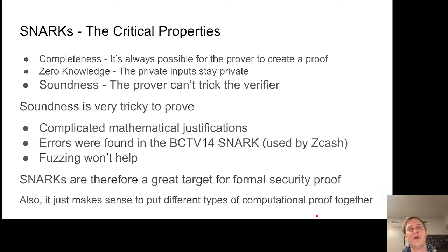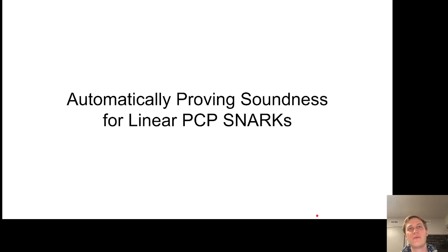Based on the story I just told, it makes sense to put different kinds of computational proofs together. We have formal proofs, we have cryptographic SNARKs, which is another kind of proof. It makes sense that these two things can feed off each other. Now I'll discuss my work and my advisor's work on automatically proving soundness for linear PCP SNARKs, which is one of the most efficient kinds of SNARKs currently in existence.